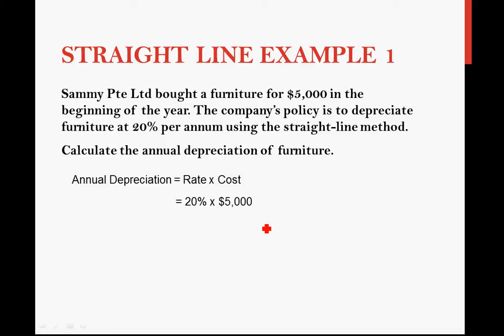Substituting in and using your calculator, you get $1,000. This $1,000 means your annual depreciation or depreciation expense per year is $1,000. Every year, the value of your furniture will drop by $1,000. This year drop $1,000, next year also $1,000, following year also $1,000 — the furniture only gets less and less valuable, by $1,000 each year.